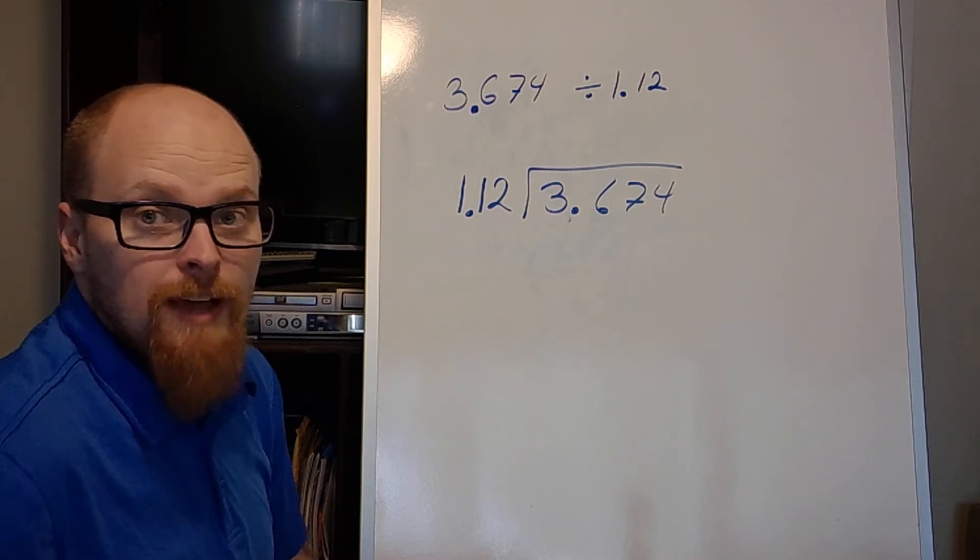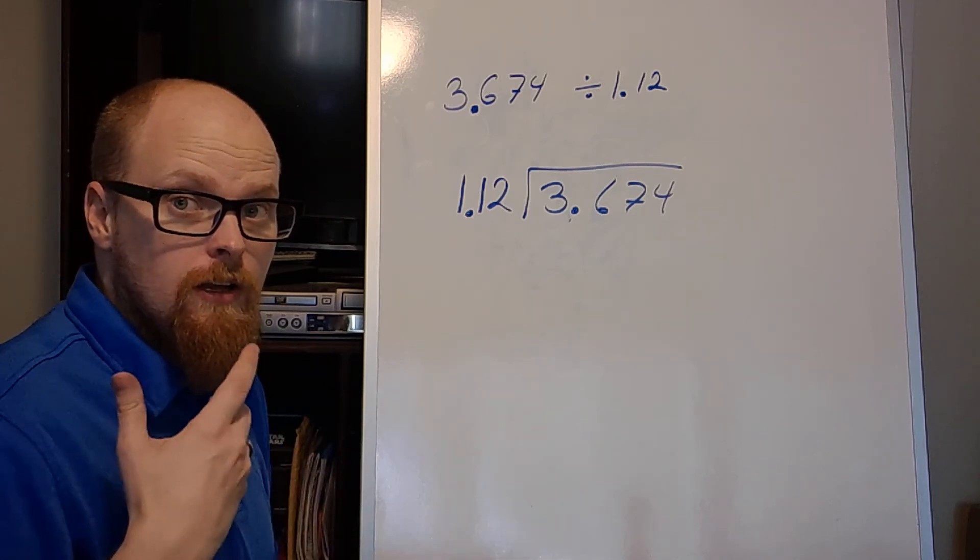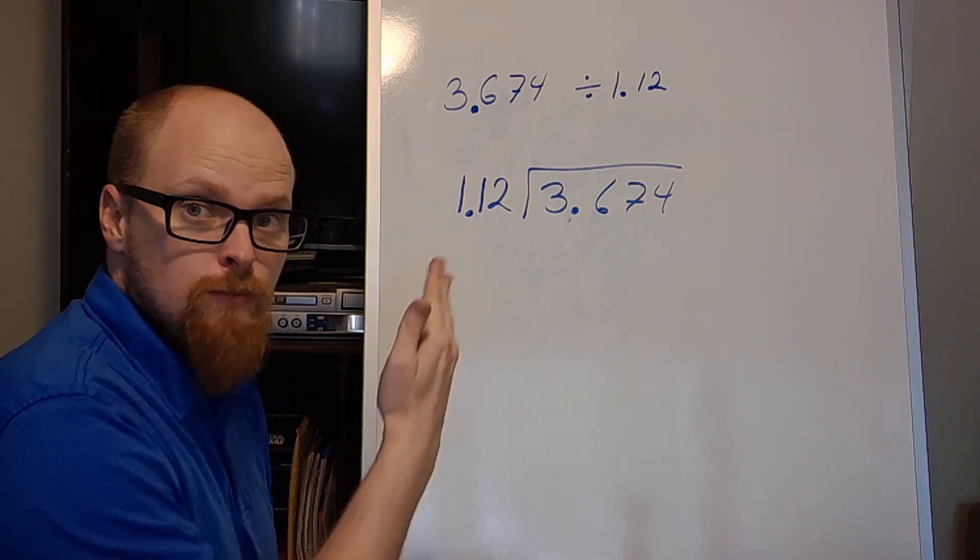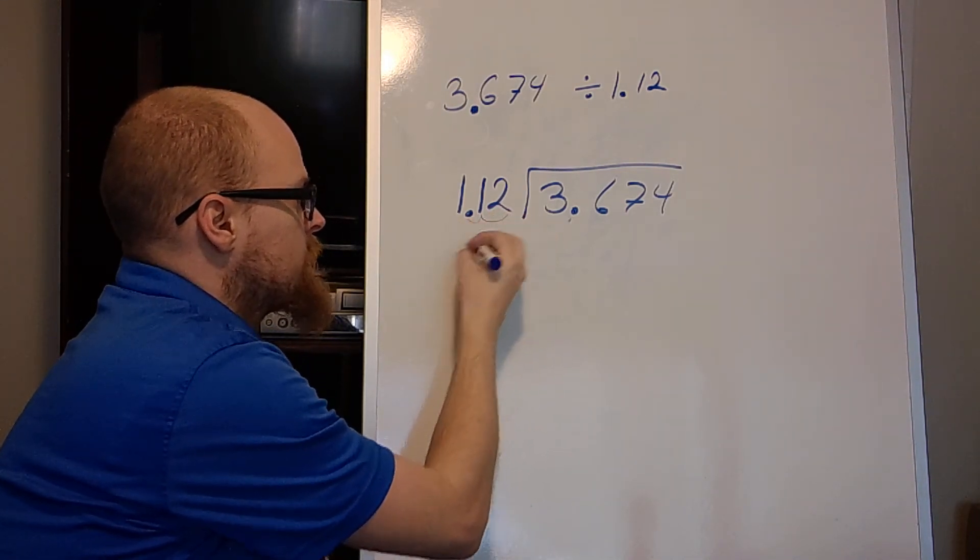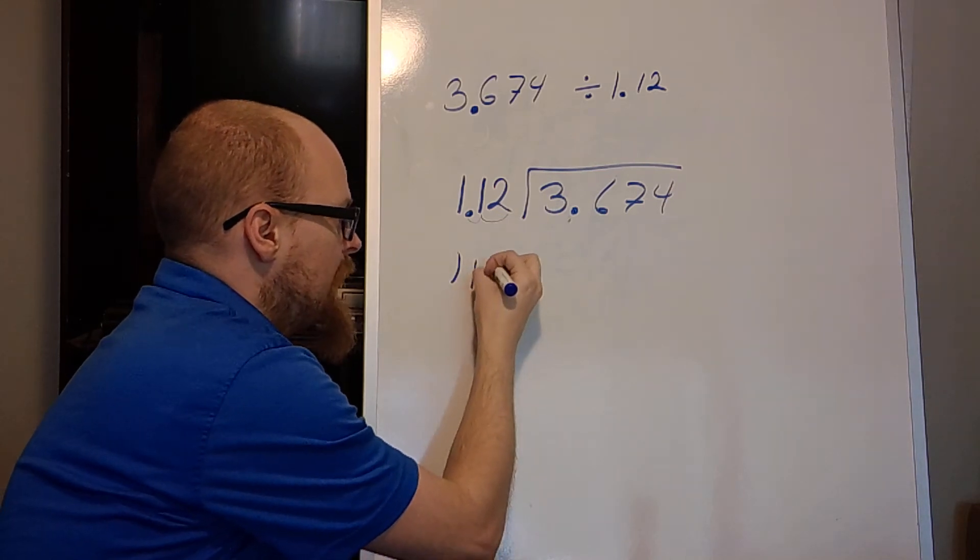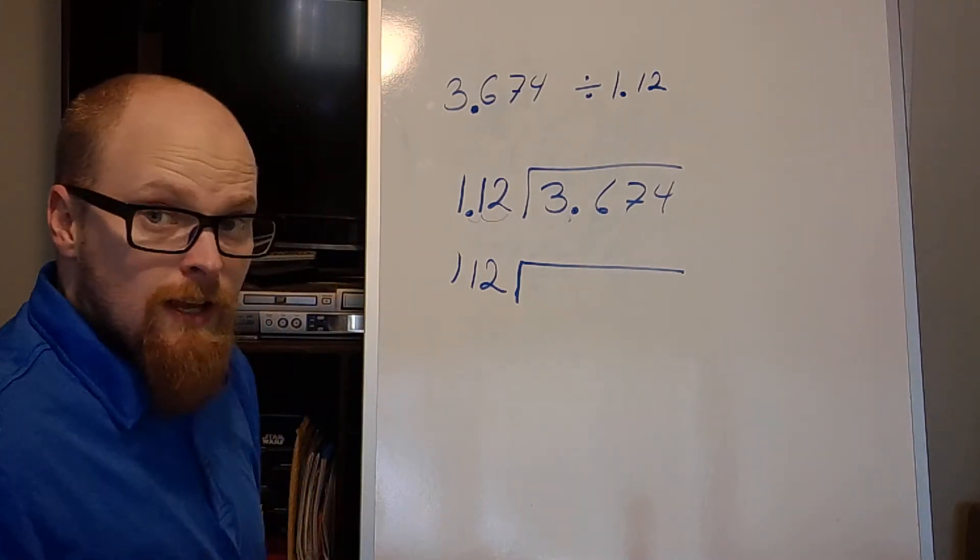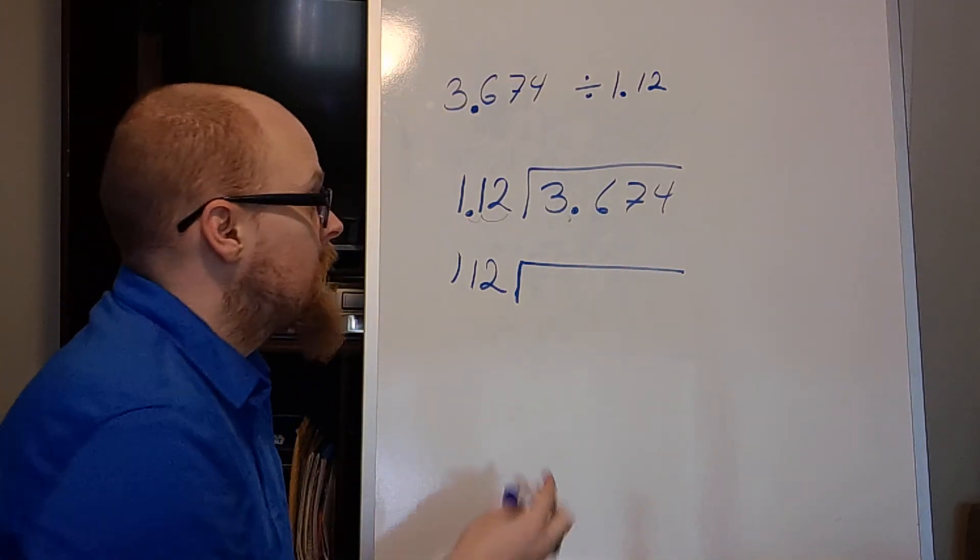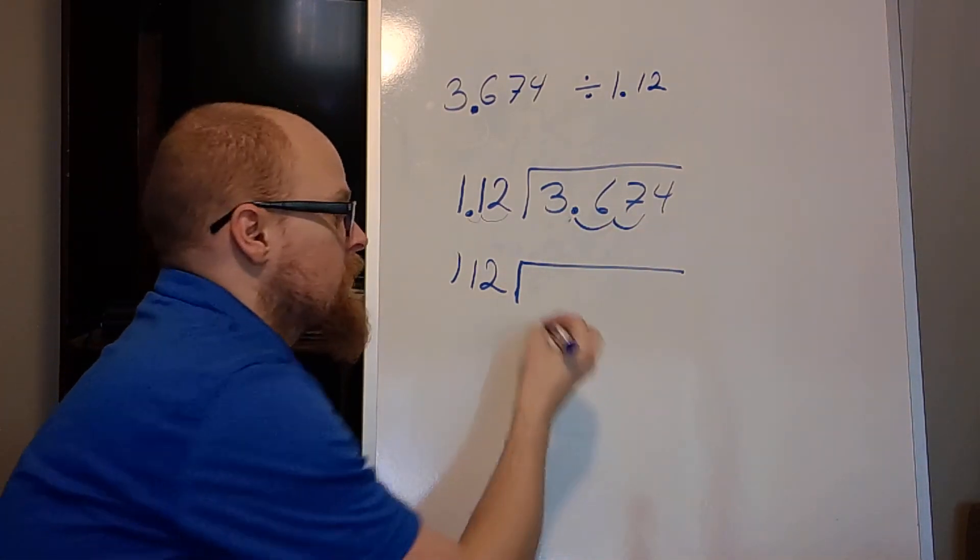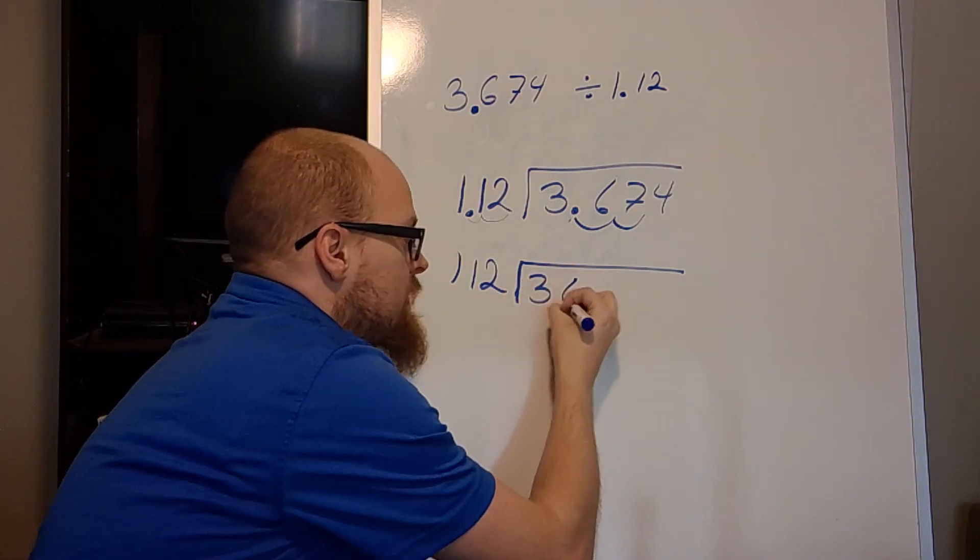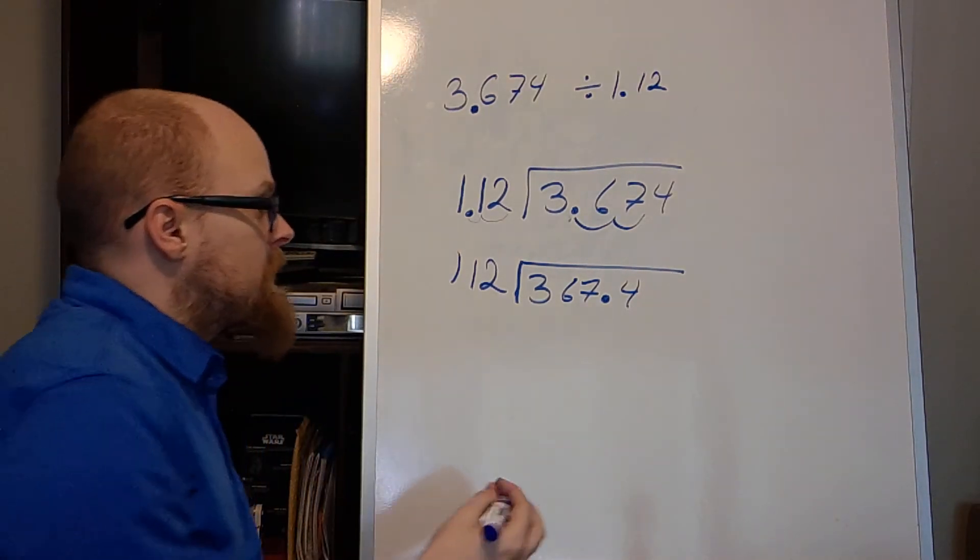So the biggest difference on this one is I have a decimal on the outside. We do not like decimals on the outside. So we have to get rid of it. Easiest way to get rid of it? Move it over. In this case, we move it from here, move it over one, two spaces. So I have 1.12 on the outside. If I do that on the outside, I have to do it on the inside too by the same number. So I moved it twice on the outside. So I'll move it one, two on the inside as well. So I have 367.4. I bring that decimal straight up.